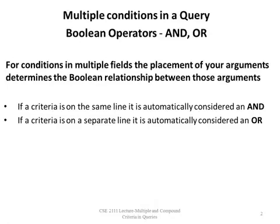Many times you want multiple conditions in a query. If you want to use multiple conditions in multiple fields, the placement of your arguments will determine the Boolean relationship between those arguments. For example, if a criteria is on the same line, it is automatically considered an AND. If the criteria is on a separate line, it is automatically considered an OR.